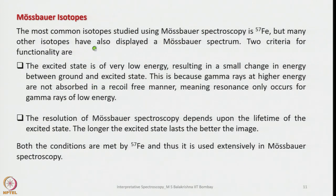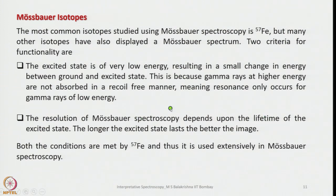The most common isotope studied using Mössbauer spectroscopy is iron-57, though many other isotopes also display Mössbauer spectra. Two criteria must be satisfied: the excited state must be of very low energy, resulting in a small energy difference between ground and excited states, because gamma rays at higher energy are not absorbed in a recoil-free manner. Additionally, the resolution of Mössbauer spectroscopy depends on the lifetime of the excited state — the longer it lasts, the better the resolution. Iron-57 meets both conditions, which is why it is extensively used.